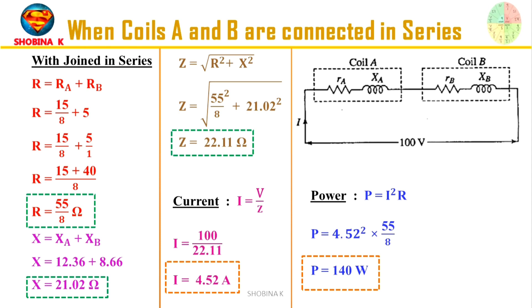Now we're going to calculate the current and power. The formula for current is I = V/Z. We know the voltage value which is given in our sum, and Z value is calculated which is 22.11Ω. Now substitute these values in the formula and obtain the current value. Now the current value is 4.52A, and the power formula is I²R. Now substitute the value in the formula so that we get the power value as 140W.